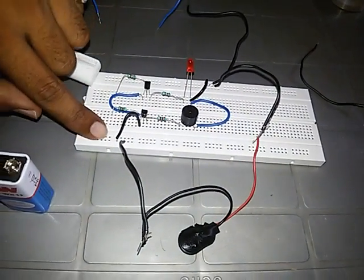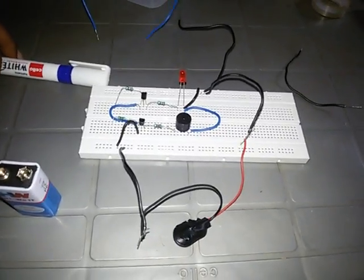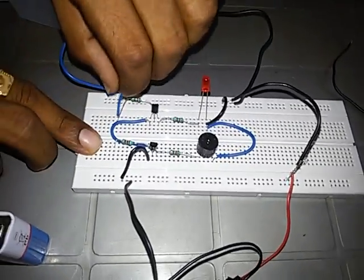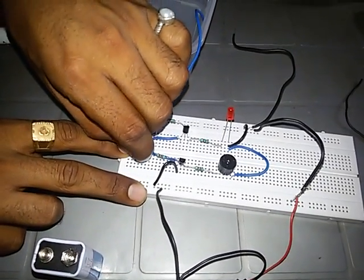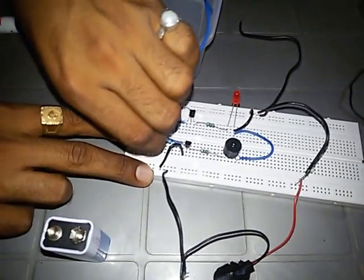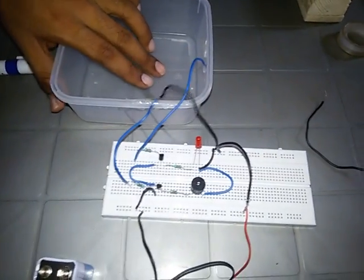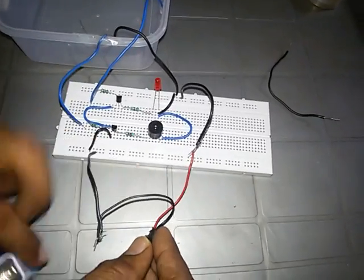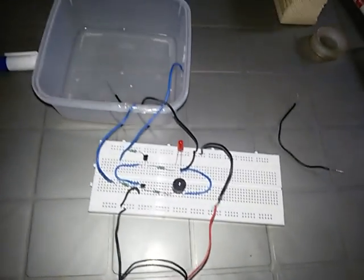And this negative terminal is connected with the emitters of both transistors. So this will be connected in the LED and this wire will be connected to the buzzer. And this will be dipped in this water tank. Now we will give the power to this circuit.